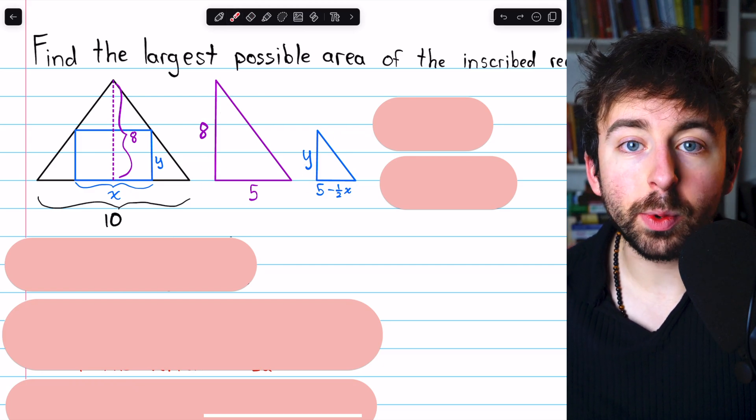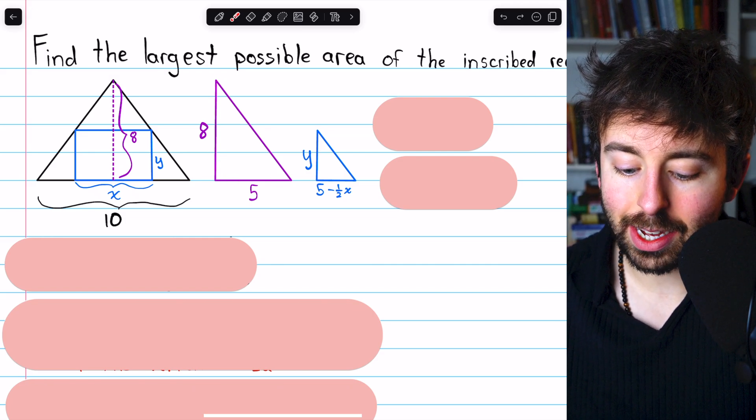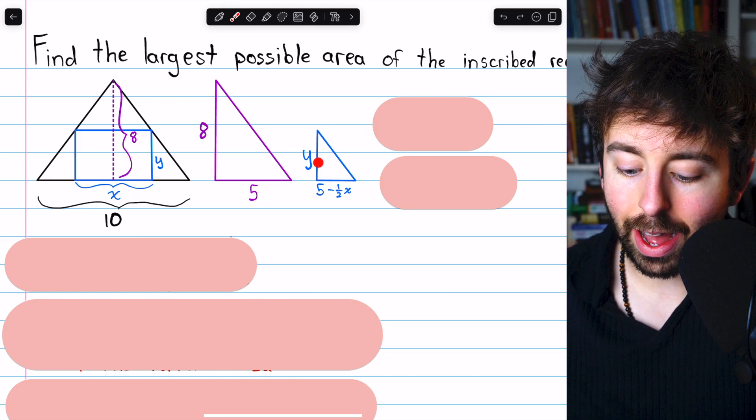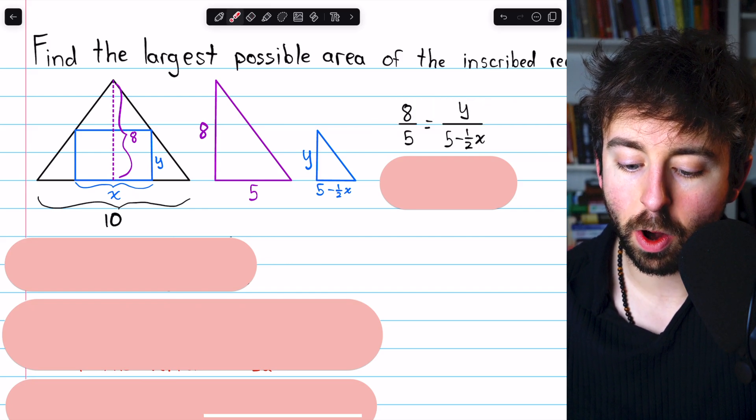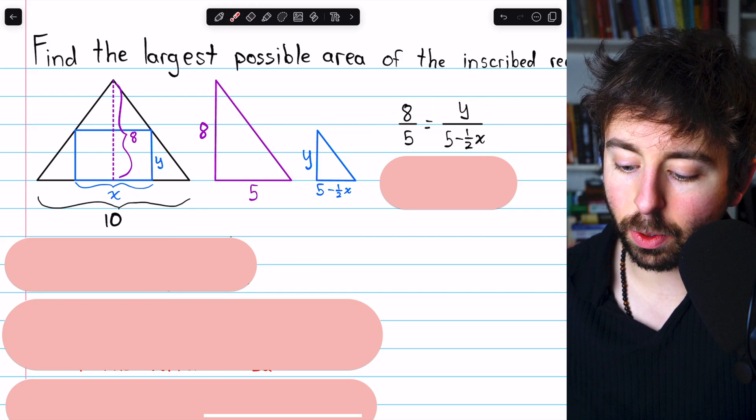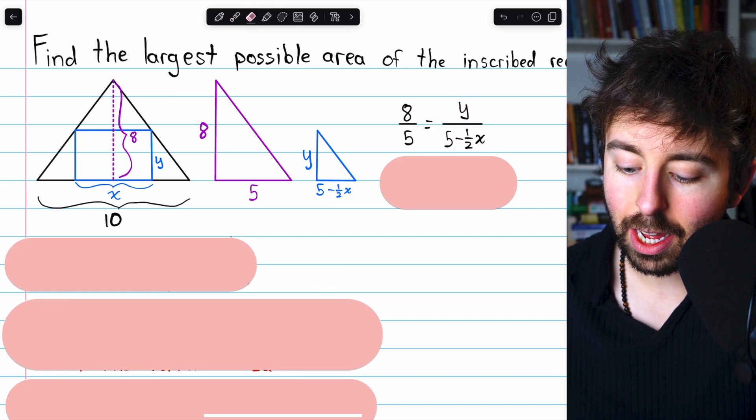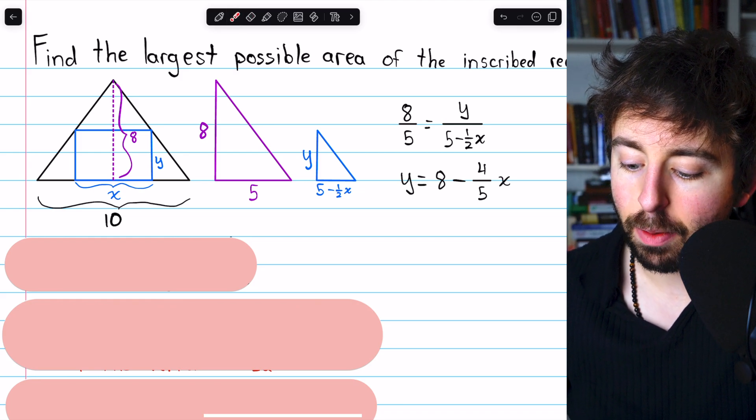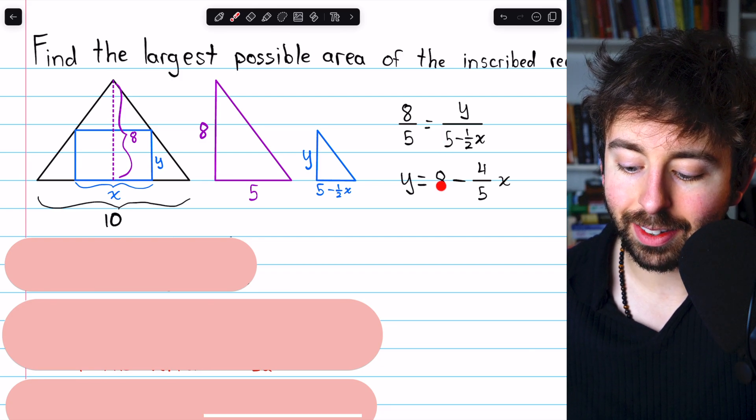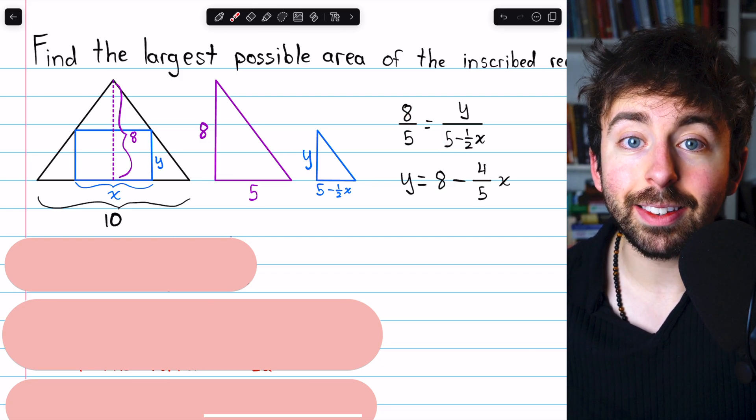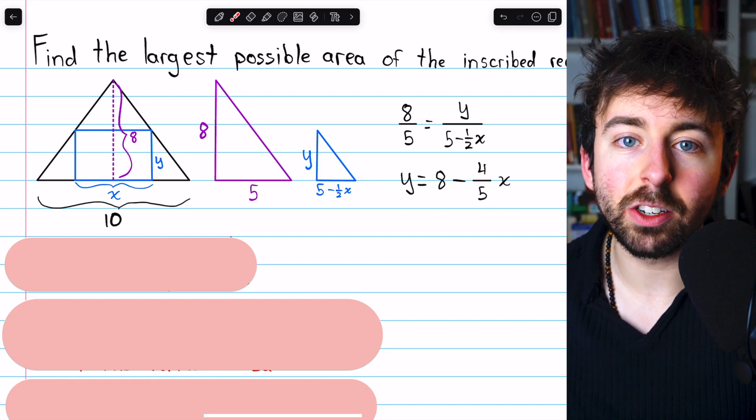Because these triangles are similar and we know what their dimensions are, we know that 8 to 5, the ratio of the height to the base, must be equal to y to 5 minus half x, the ratio of the height to the base, because they are similar triangles. So 8 to 5 equals y over 5 minus half x. Now we can solve this equation for y by multiplying both sides by 5 minus half x. 8 fifths times 5 is 8, and 8 fifths times minus half x is minus 4 fifths x. So we've now expressed y in terms of x.